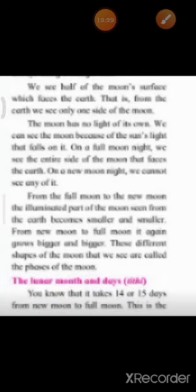We see half of the moon's surface which faces the earth — from the earth, we see only one side of the moon. The moon has no light of its own; we can see the moon because of the sunlight that falls on it. On a full moon night, we see the entire side of the moon that faces the earth, while on a new moon night we cannot see any of it.